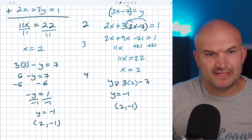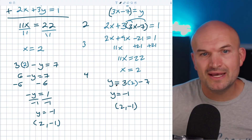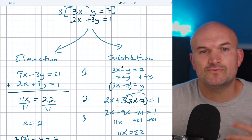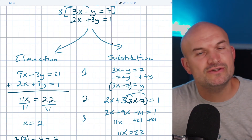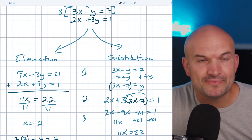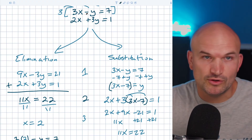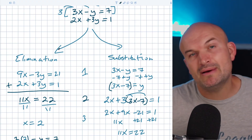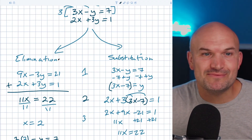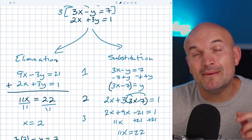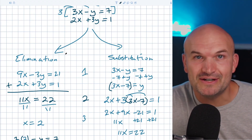Hopefully this made sense in identifying the difference between substitution and elimination. I would highly recommend using substitution whenever a variable already has a coefficient of positive 1. If you already have an equation where both x and y have non-unit coefficients, it's probably better to use the elimination method. What do you think was the easier method? Let me know in the comments below, and check out the next video for more examples of solving systems of equations.